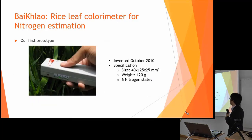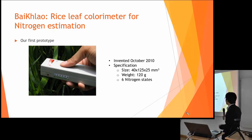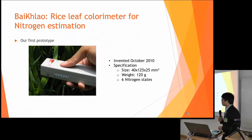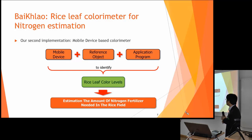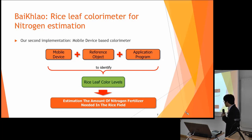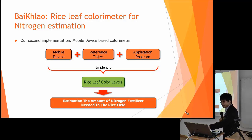Our first prototype was developed in October 2010. It's quite compact and can be used in the field. But later, with the rise of the mobile phone, we tried to improve our technology to a mobile application-based approach. Right now we have three components: a mobile device, a diffuse object, and an application program to identify the rice leaf color level and estimate the nitrogen fertilizer needed.